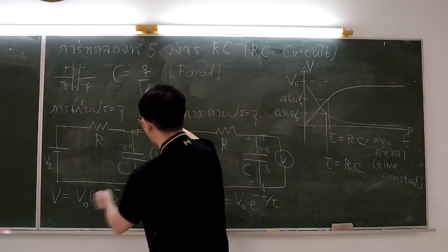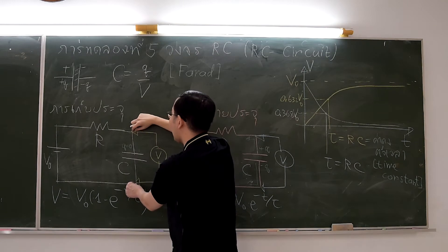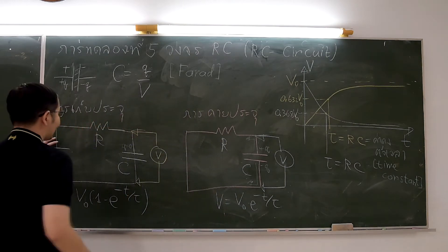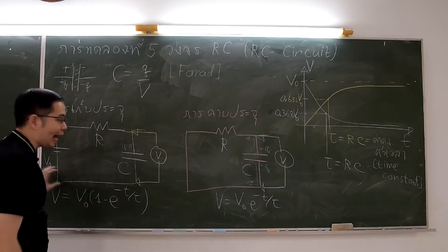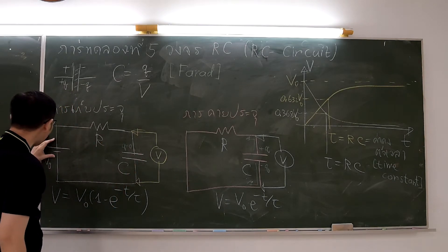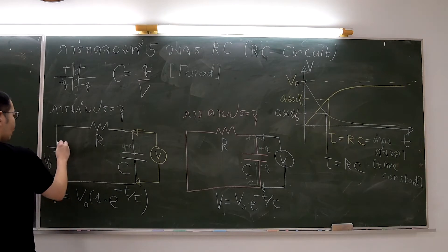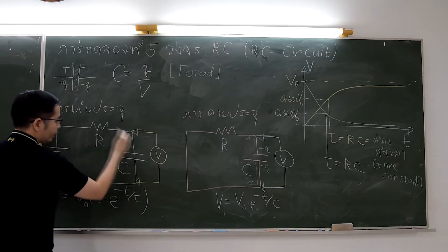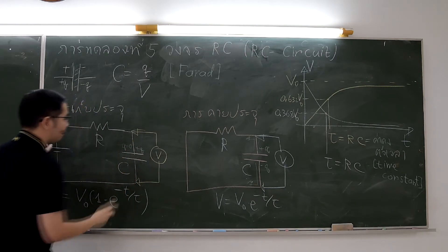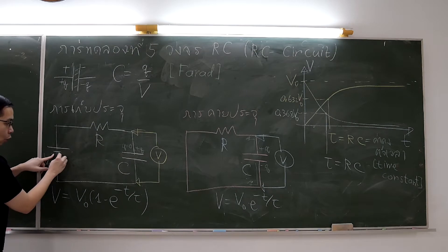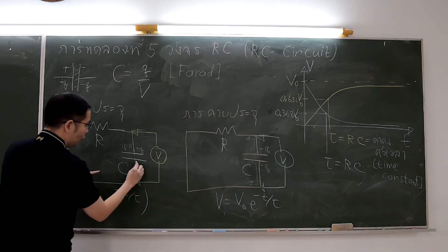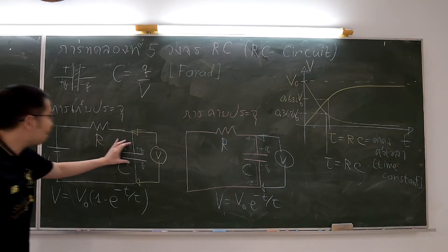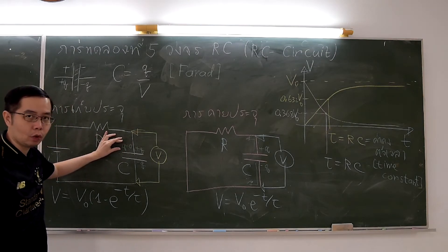We put a voltmeter across the capacitor to measure the potential difference. Before charging, there are no charges on the capacitor at the initial time t equal to zero. When we charge the capacitor, charges move from the battery — positive charges to the positive pole and negative charges to the negative pole. When the charges increase, the potential difference also increases.